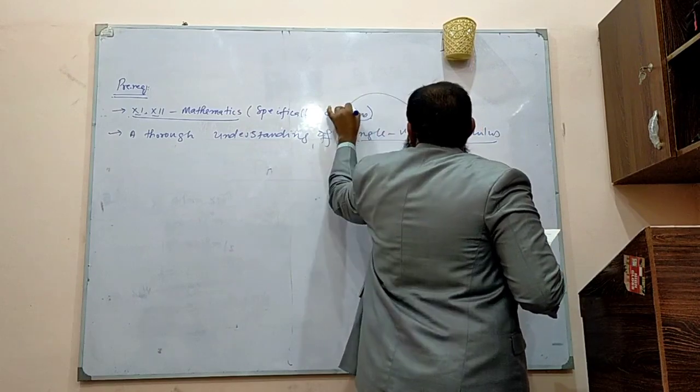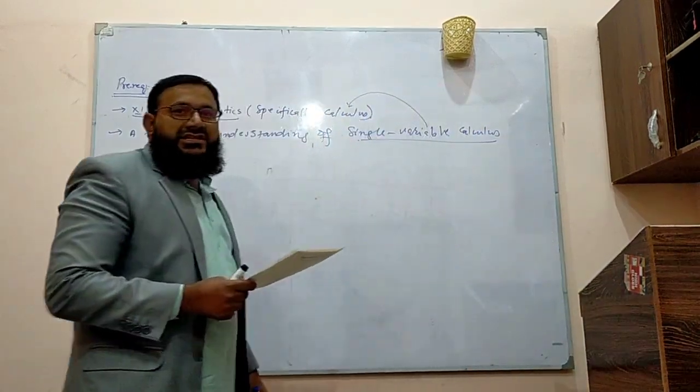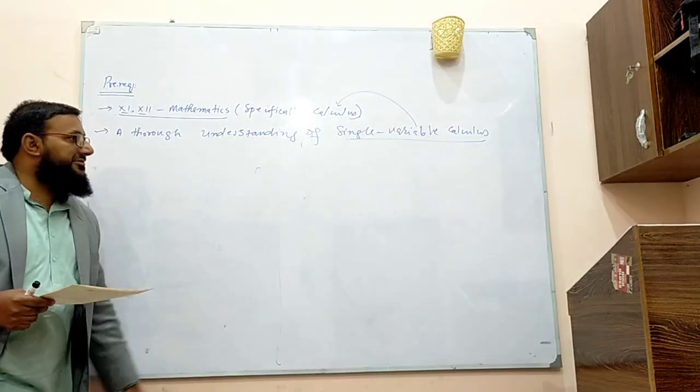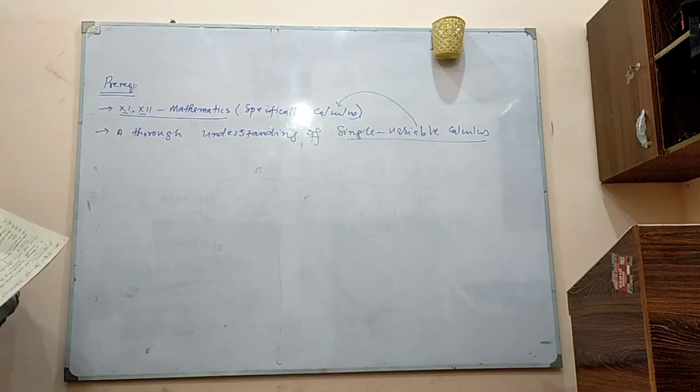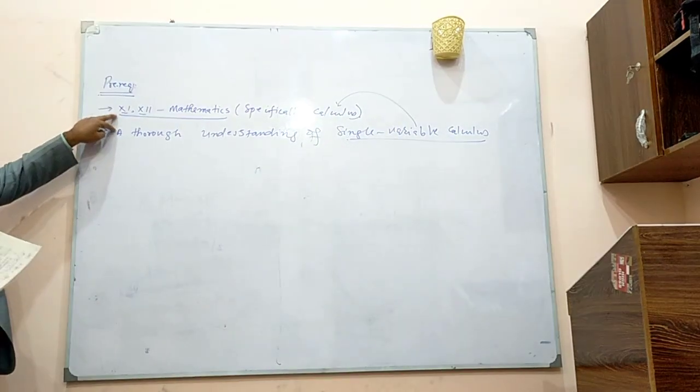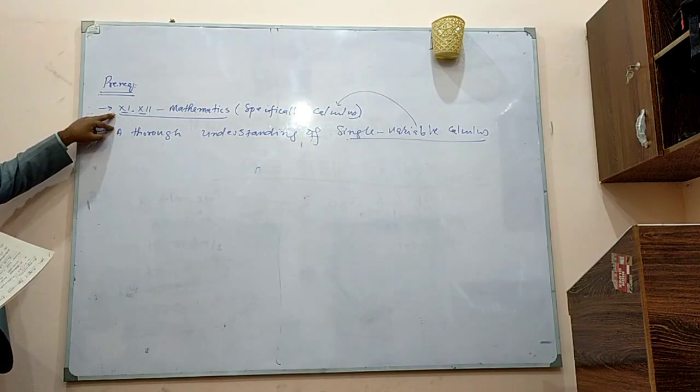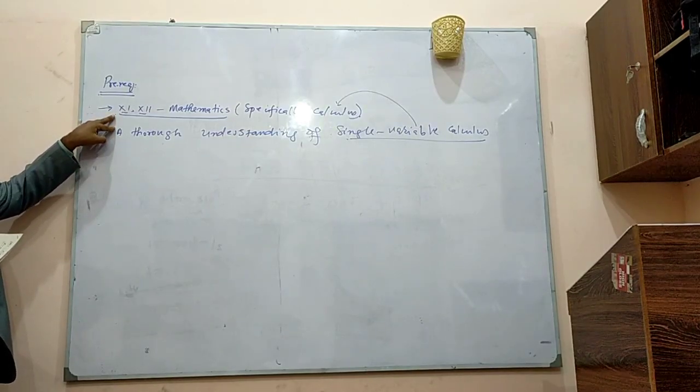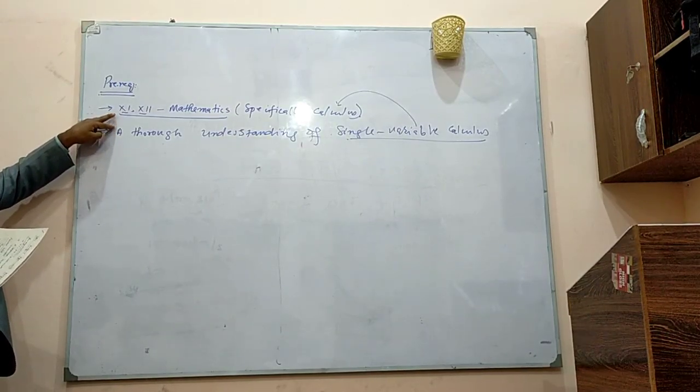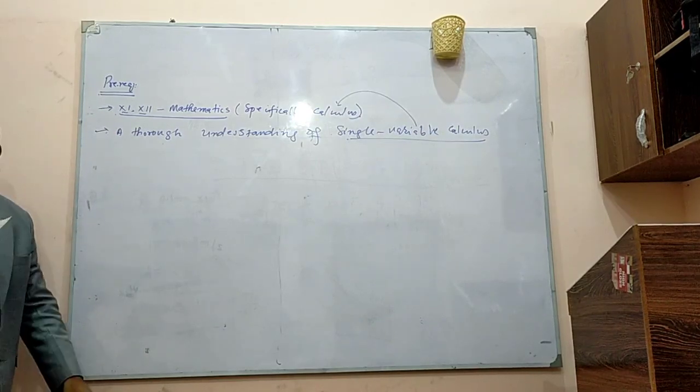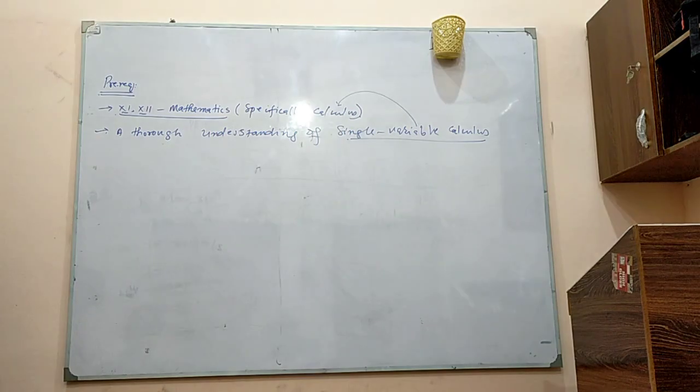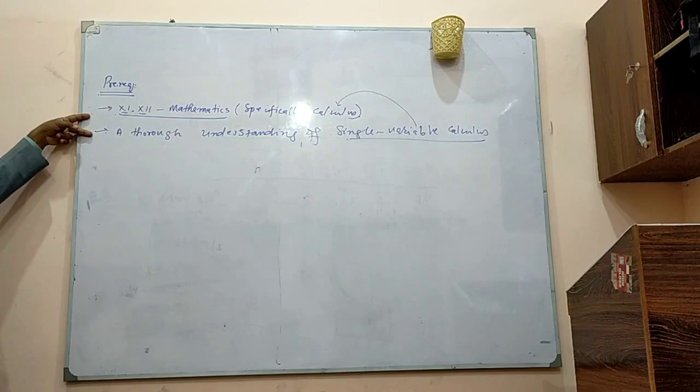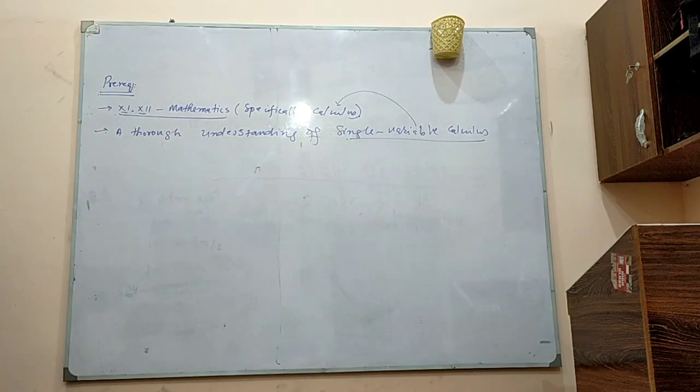Single variable calculus is the same calculus that we study in first year and intermediate, but when you study this particular thing from any international book which is written on single variable calculus, then the things would be a bit different. There are so many online courses available on these things which you can do, and you can improve these things. But if we give time to these things and we start discussing these things, then it will take our three to four weeks, and we will consume our two or three weeks within these fundamental things, which is not a good idea.